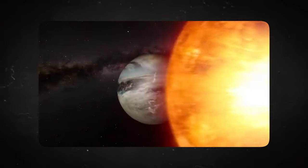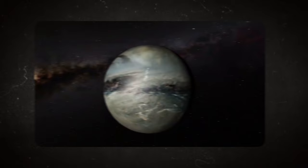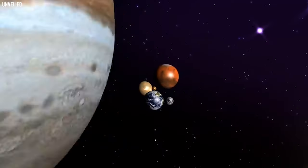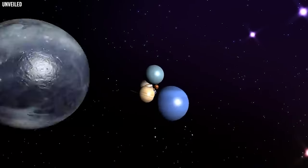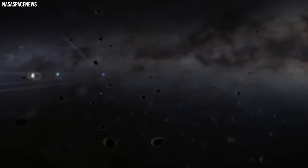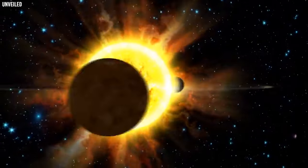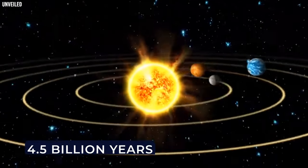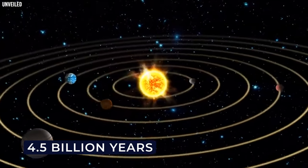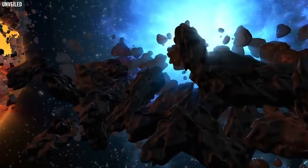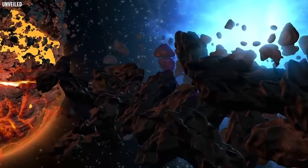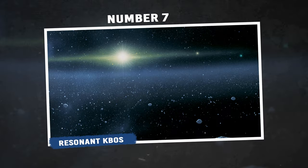One of the most renowned Kuiper Belt inhabitants is Pluto, once deemed the ninth planet before being reclassified as a dwarf planet. Another notable figure is Eris, which rivals Pluto in size and intrigue. The Kuiper Belt's icy denizens offer a glimpse into the ancient history of our cosmic neighborhood, preserving clues about the solar system's formation over 4.5 billion years ago. Occasionally, these icy wanderers become comets, gracing our night skies with their tails as they venture closer to the Sun.